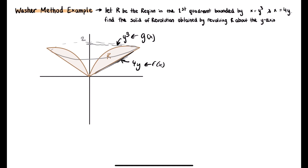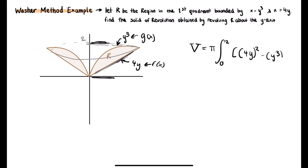Putting that into our washer method equation: pi times the integral from 0 to 2 of 4y squared minus y cubed squared dy. Evaluating this integral gives 512 pi over 21.